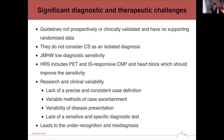These two diagnostic guidelines are very helpful clinically, but they've never been prospectively or clinically validated and have very little supporting randomized data. They also don't consider cardiac sarcoidosis as an isolated diagnosis. The Japanese guidelines have a very low diagnostic sensitivity, and the Heart Rhythm Society guidelines, while helpful in including PET and immunosuppressive-responsive cardiomyopathy, require further evaluation.